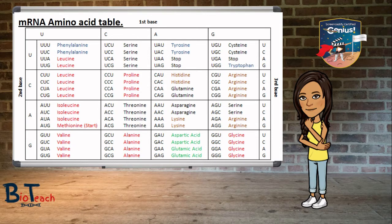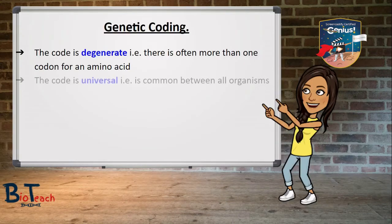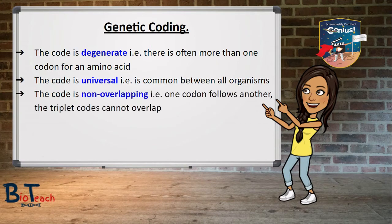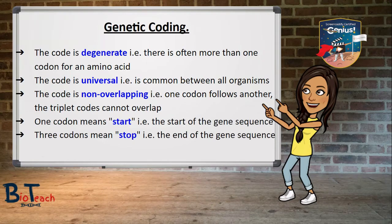There are also at least two codons for glutamine and about four for alanine. The code is also universal, meaning it is common amongst all organisms. The code is non-overlapping, which means one codon follows another and the triplet codes cannot overlap. There are also two special codons known as start and stop codons — the start codon marks the beginning of the gene sequence and the stop codon marks the end, with more detail on those in subsequent slides.